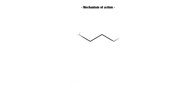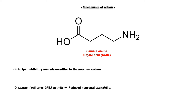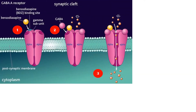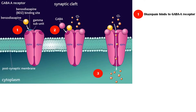Gamma-aminobutyric acid, or GABA, is the principal inhibitory neurotransmitter in the nervous system. Diazepam exerts its effects by facilitating the activity of GABA and reducing neuronal excitability. Diazepam binds to an allosteric site at the interface between the alpha and gamma subunits on GABA-A receptor chloride ion channels in the excitatory neurons. This binding will increase the frequency of chloride ion influx to the excitatory neurons, which leads to hyperpolarization and reduced neuronal excitability.